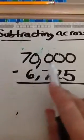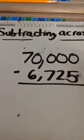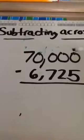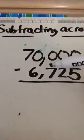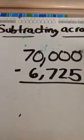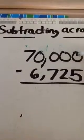When we're subtracting across zeros, the challenging part is the regrouping and borrowing. Looking at this number, 70,000 minus 6,725, you can't borrow, but you need to borrow.